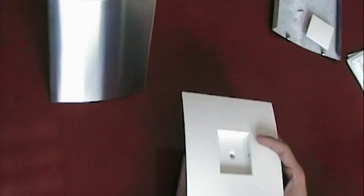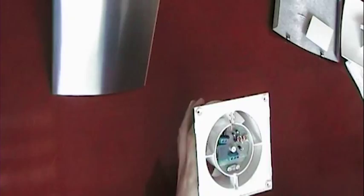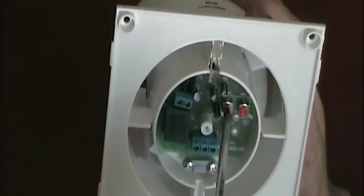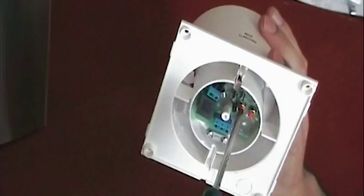To adjust the timing of the device, simply take a Phillips screwdriver and turn the dial either clockwise or anti-clockwise. To increase the timing, turn the device clockwise. To decrease the time, turn it anti-clockwise.